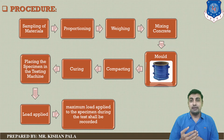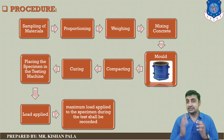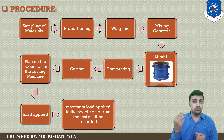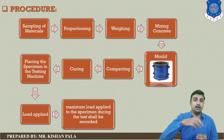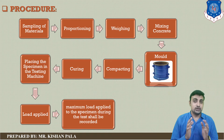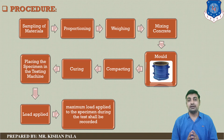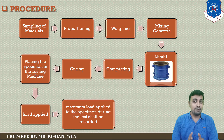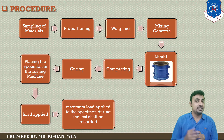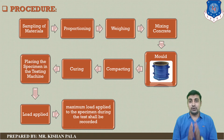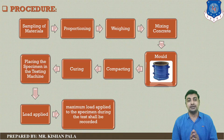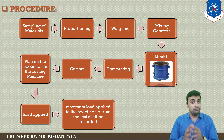You require a cylindrical mould with 150 mm diameter and 300 mm height. Oil the internal surface, then fill the concrete mass in intervals and compact it properly using a tamping rod of 16 mm diameter and 60 cm height, with at least 30 blows. Then allow 24 hours for setting of the concrete mass, and then remove the mould.